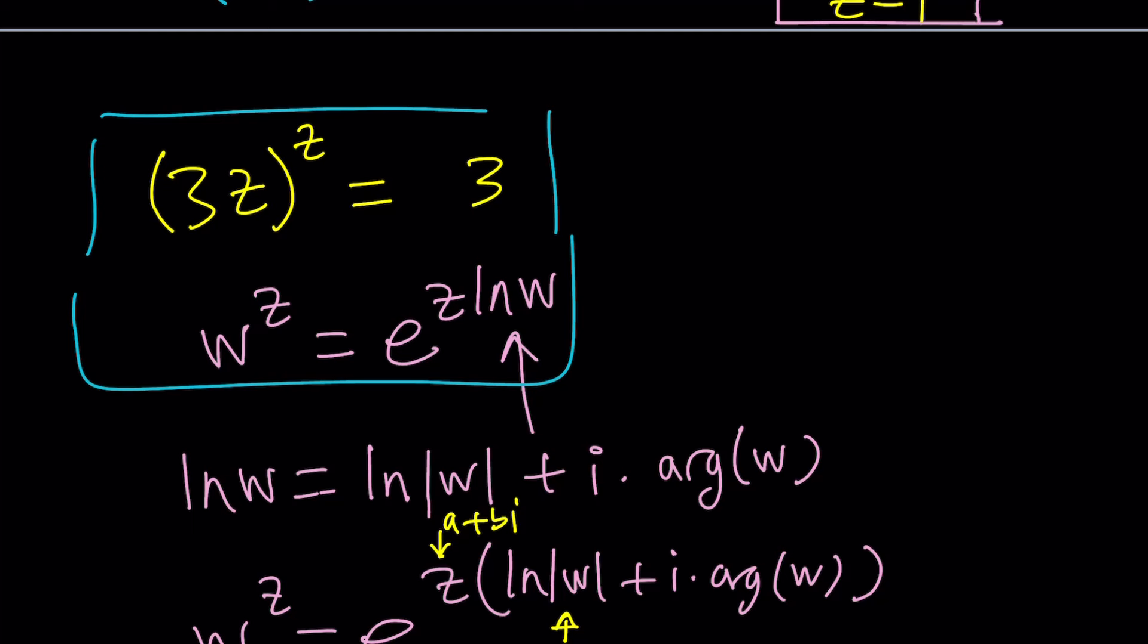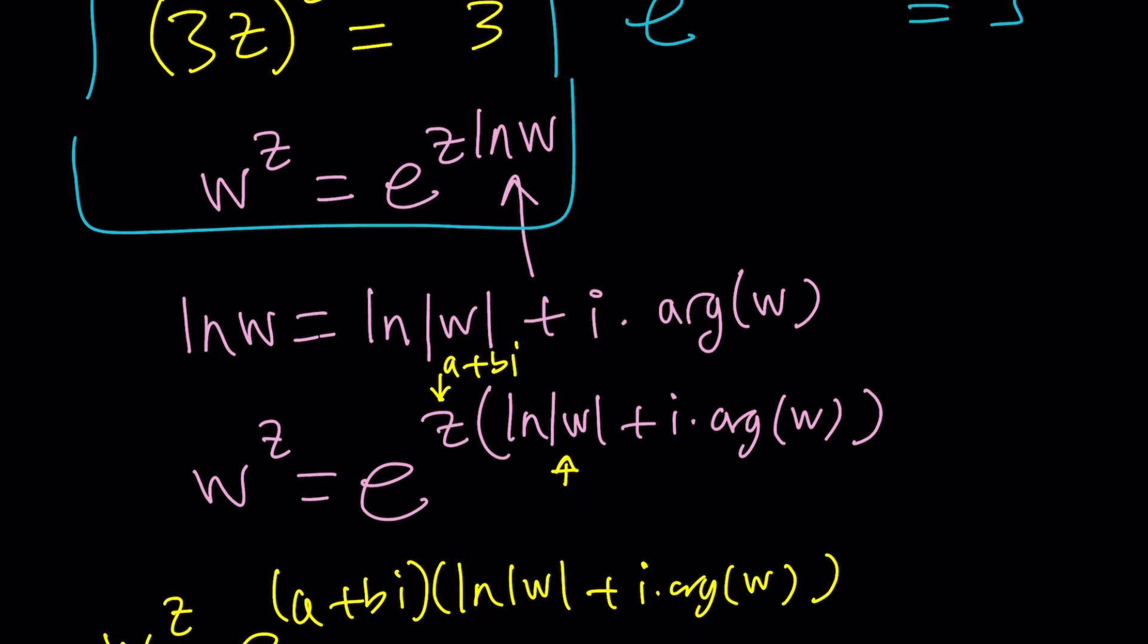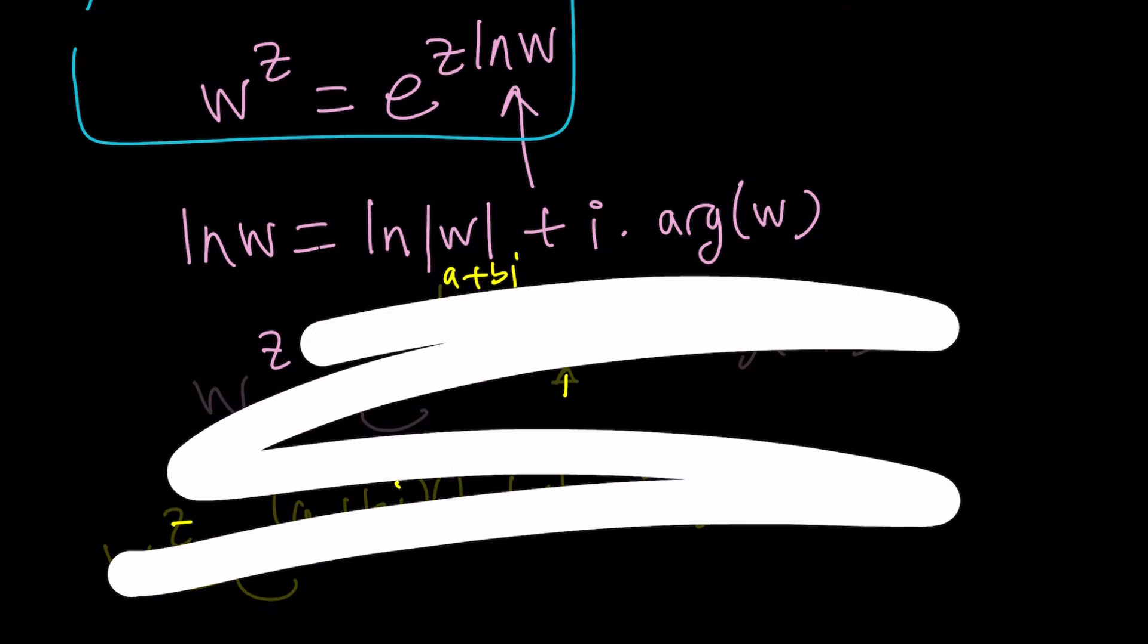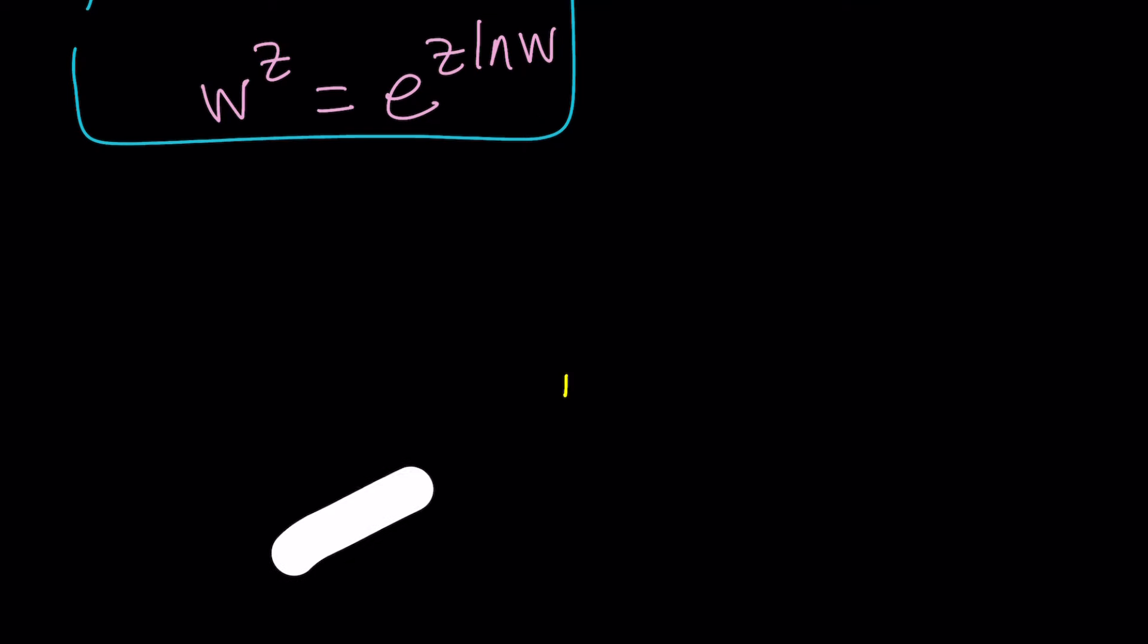So now I can write this as e to the power z ln 3z. And that's equal to 3. Now here's what I'm going to do. I'm going to go ahead and complexify the right-hand side. Let me go ahead and erase this. Hopefully you took a good picture, a screenshot. Because I'm about to erase it. Ready, set, go.